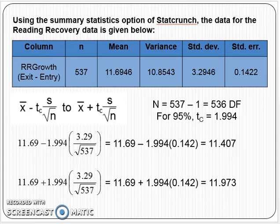Notice what we need for a T interval. Give me the formula: we need the sample mean — the mean growth for the sample — a T confidence value, and then the standard deviation of the sample and the sample size.